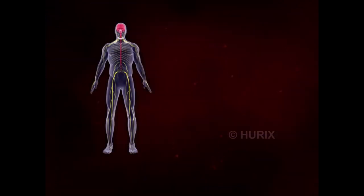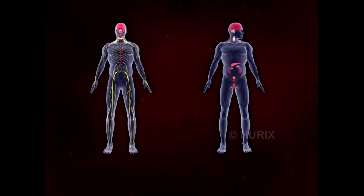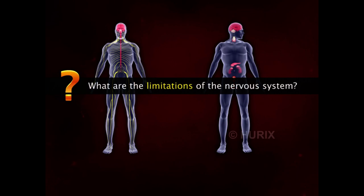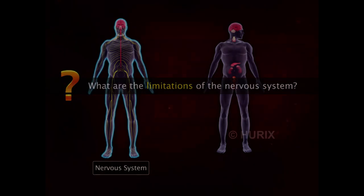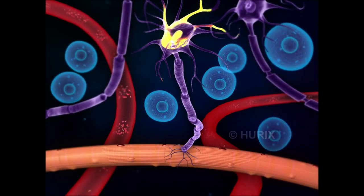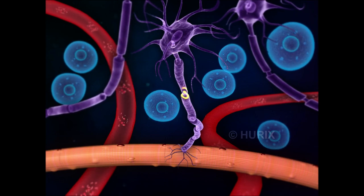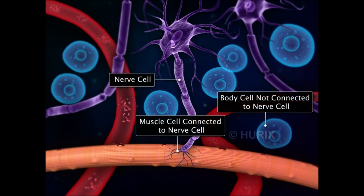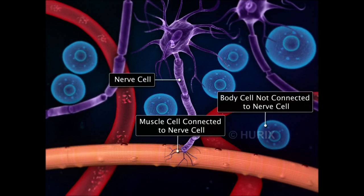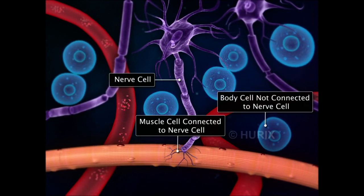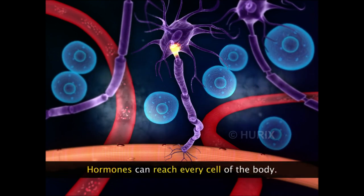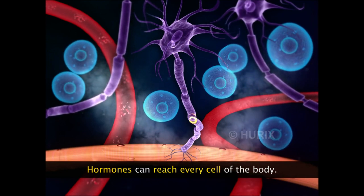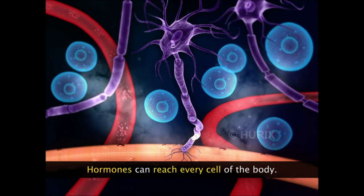Although the nervous and endocrine systems play equally important roles in regulating body processes, there are limitations that apply to the nervous system. Two sections of the nervous system can communicate only if they are connected through nerve fibers, and not every cell of our body is connected to nerve tissue. Hormones, however, can reach tissue via the blood and diffuse all around to reach potentially every cell of the body.